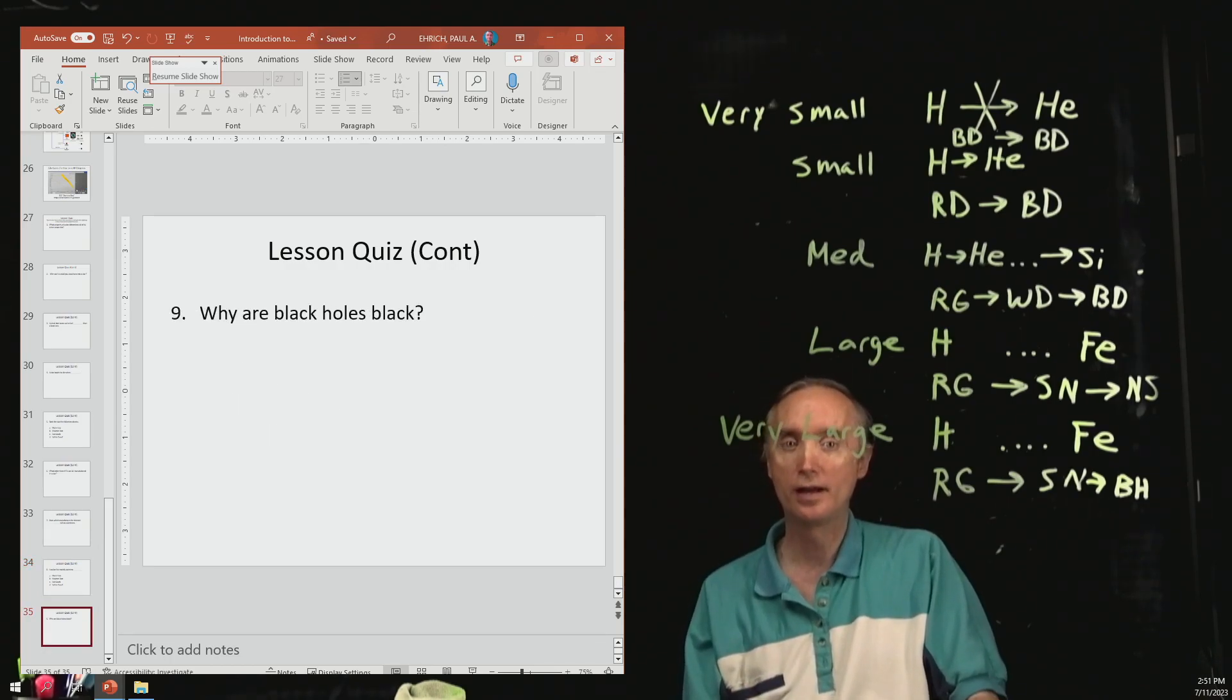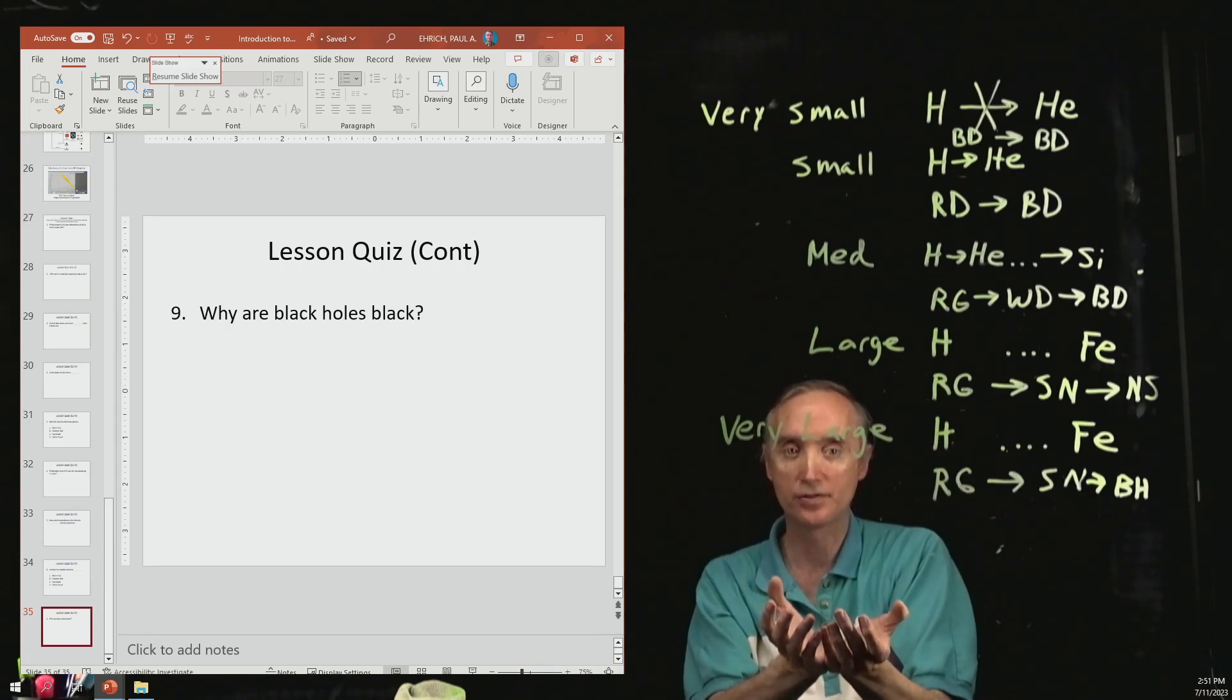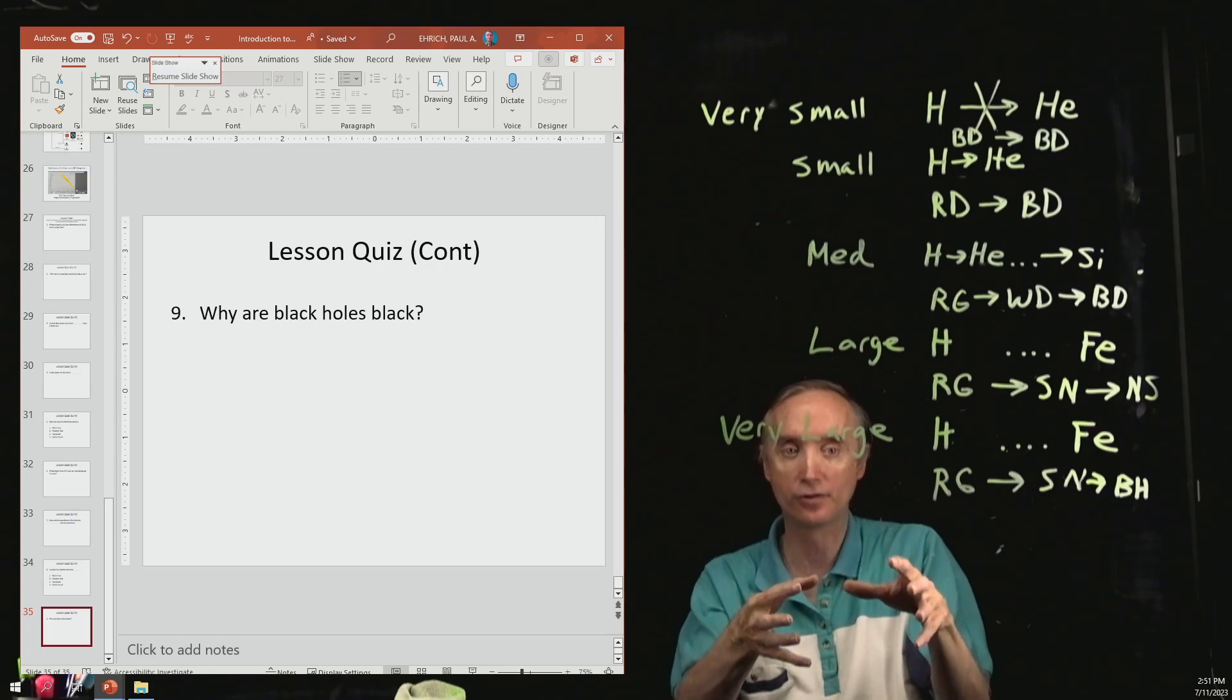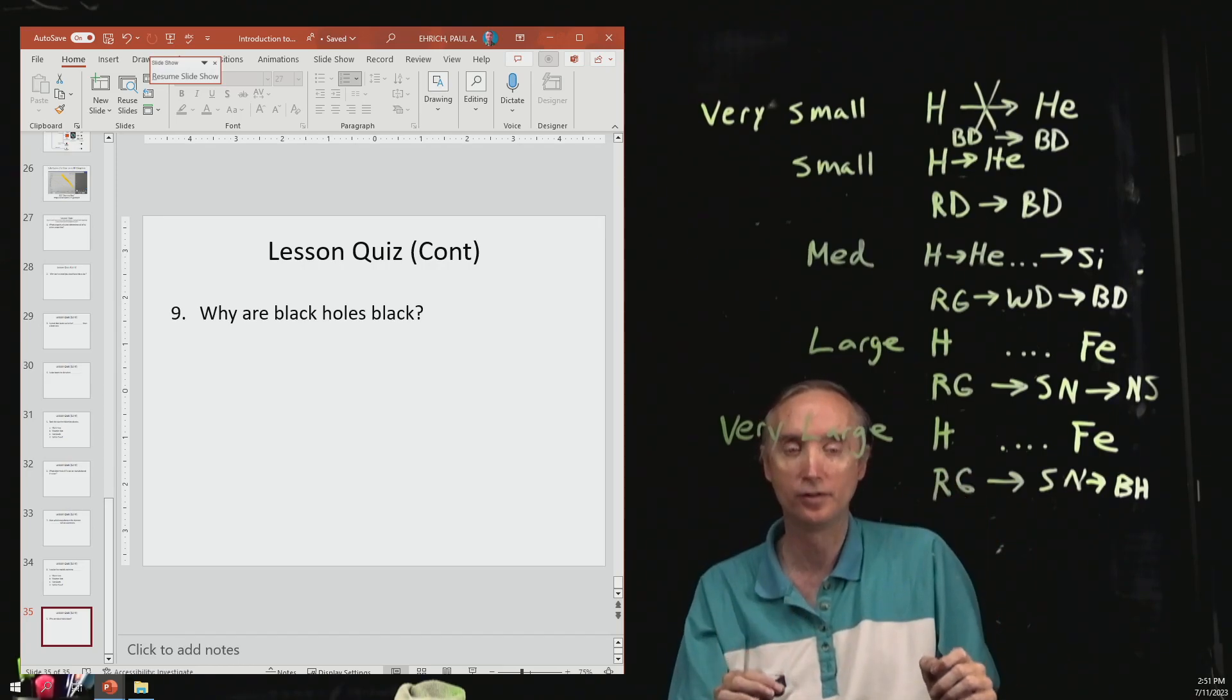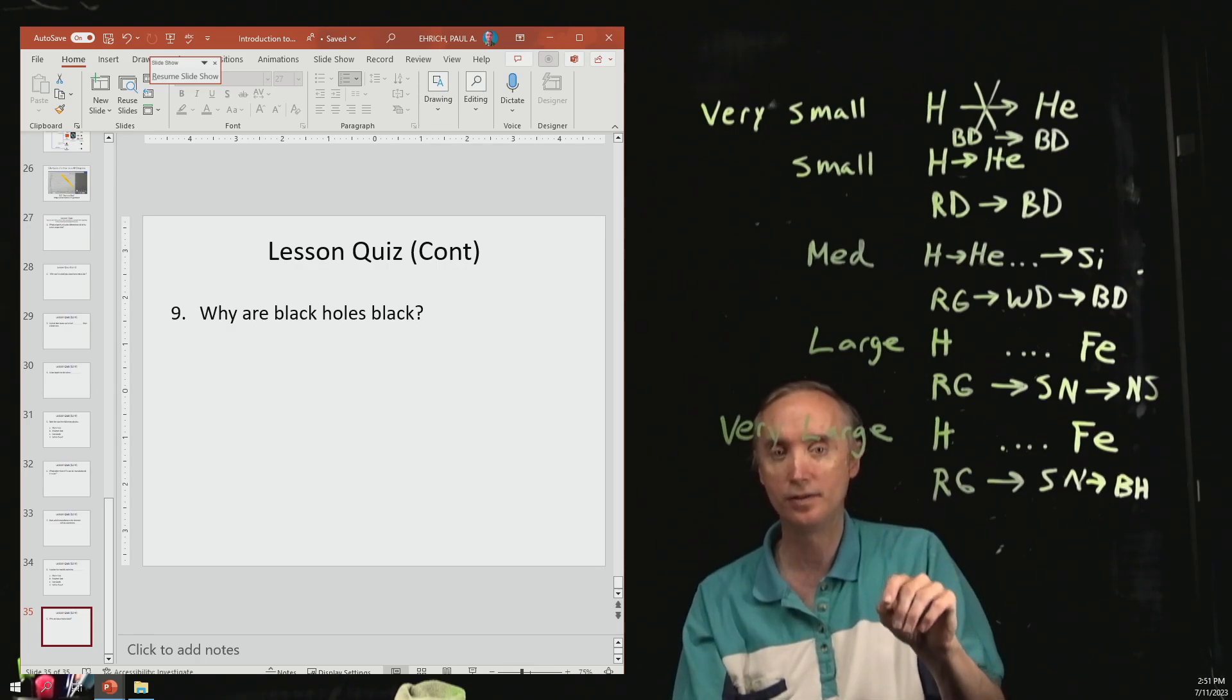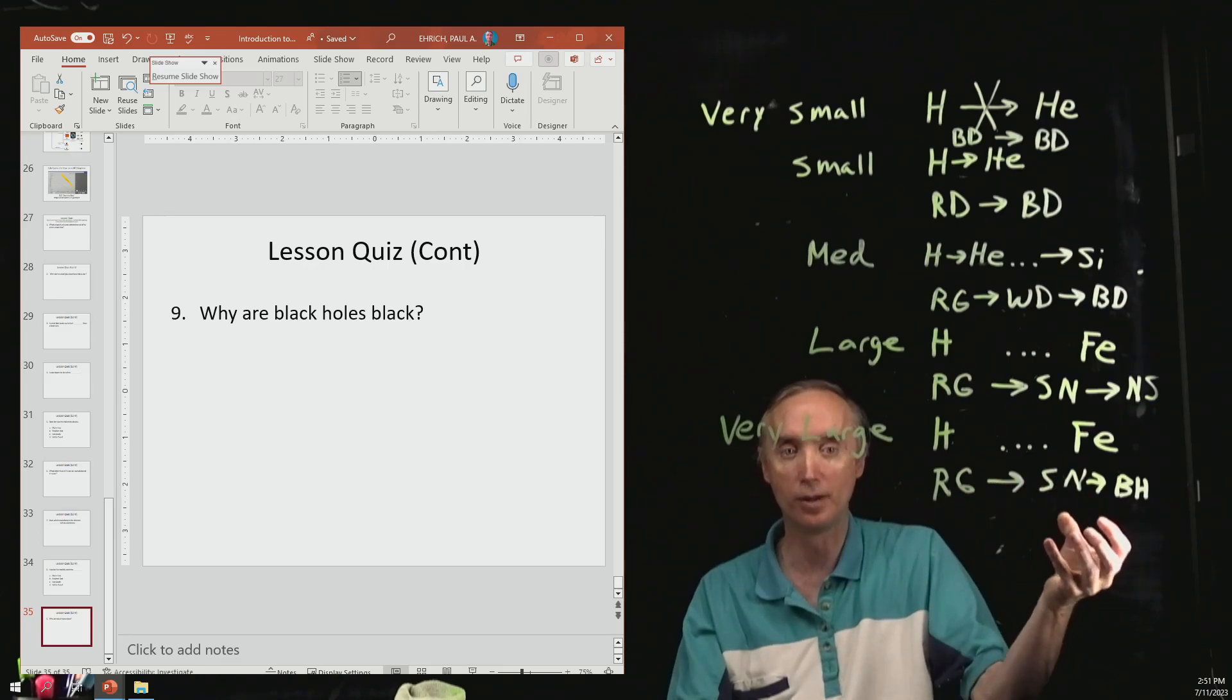Why are black holes black? They do have this event horizon. And so that is, it's a boundary. And if you go in, light itself cannot escape the event horizon of a black hole. So, any light that is inside the event horizon of a black hole, it doesn't have enough velocity, enough escape velocity, in order to escape out of the black hole.